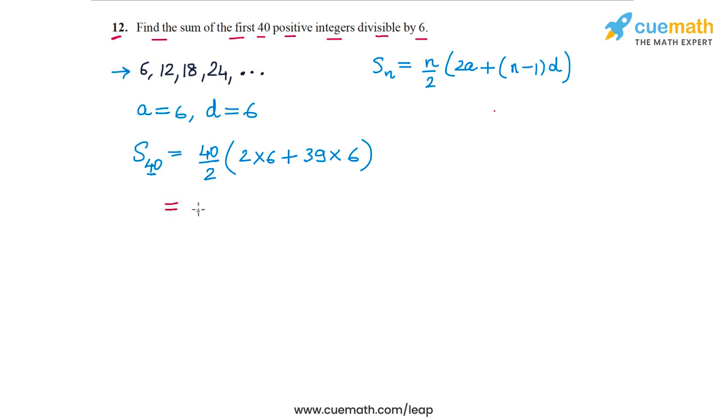Let's evaluate this. 40/2 is 20 times in the bracket, we will get 2 into 6, that's 12. And we will get 39 into 6, so that is equal to 234.